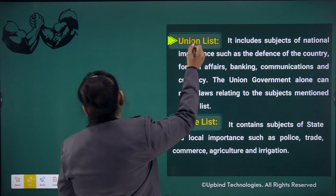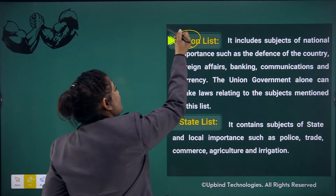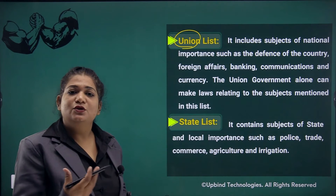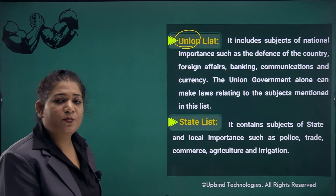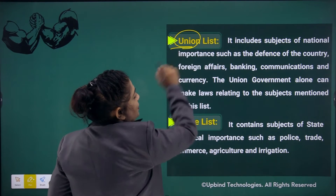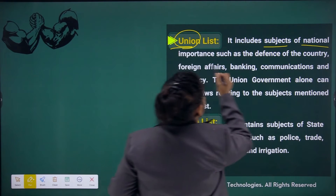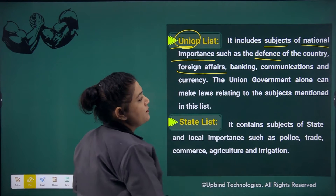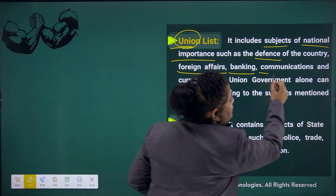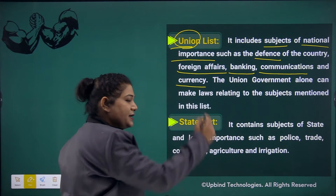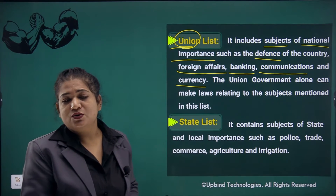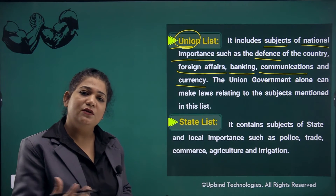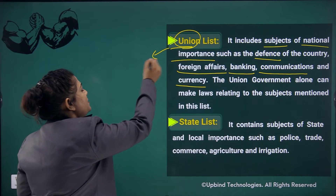The Union List — in this list, the subjects are those on which the union government makes laws. All these subjects are of national importance, such as defense, foreign affairs, banking, communications, and currency. These subjects are added in the union list and union government takes decisions on all these subjects. Approximately 101 subjects are listed in the union list.